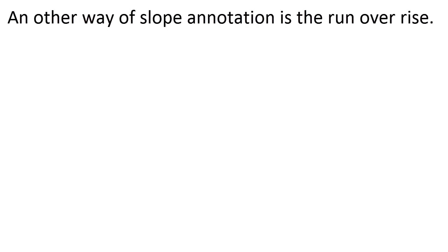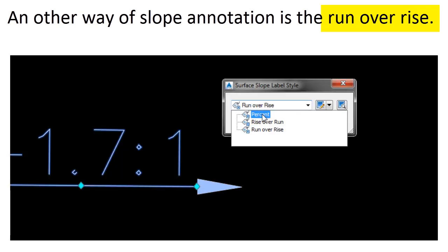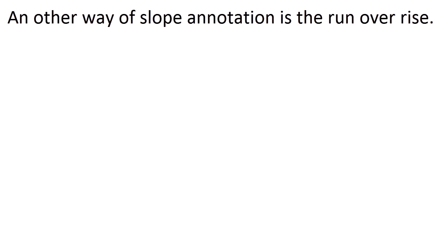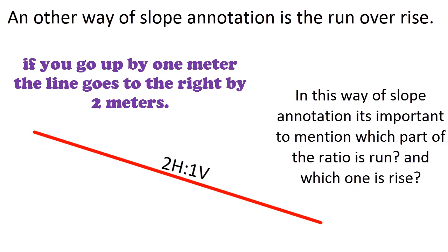Another way of slope annotation is run over rise—remember, not rise over run, it's run over rise. Let's say a line has a slope of 2:1. What does this mean? It means if you go up by one meter, the line goes to the right by two meters. In this way of slope annotation, it's important to mention which part of the ratio is run and which is rise. That's why I have put H and V in the ratio, where H represents the horizontal unit and V is for the vertical.